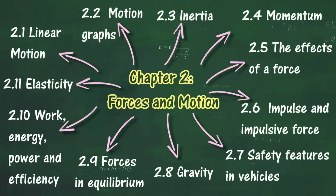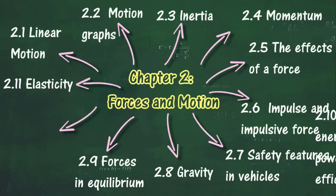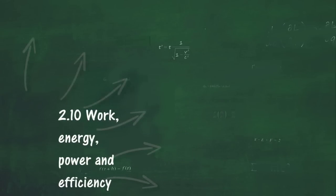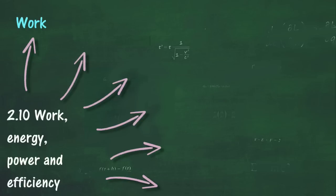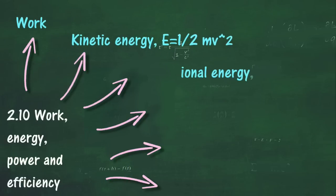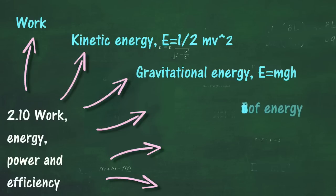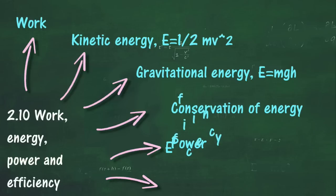In Section 2.10, we will learn about Work, Energy and Power. At the end of this section, you should be able to: Define work as the product of an applied force and displacement of an object in the direction of the applied force, State that when work is done energy is transferred from one object to another, Define kinetic energy, Define gravitational potential energy, State the principle of conservation of energy, Define power, Explain what efficiency of a device is, Solve problems involving work, energy, power and efficiency, and Recognize the importance of maximizing efficiency of devices and conserving resources.